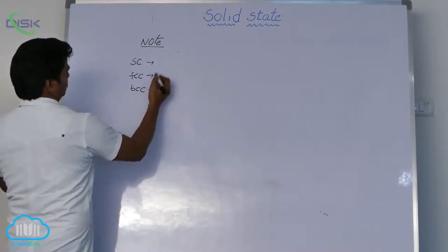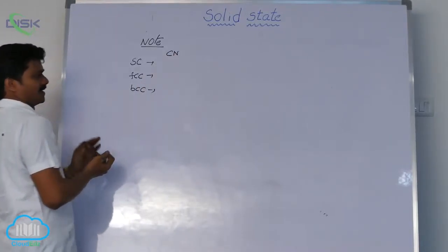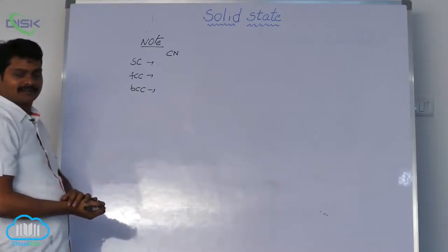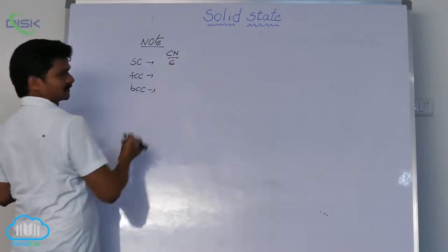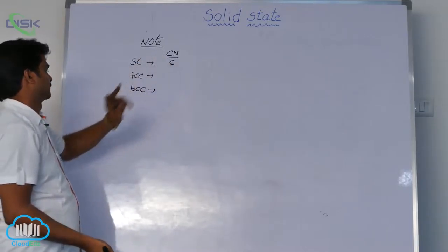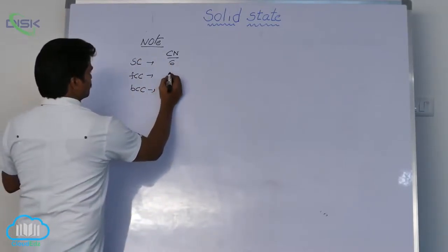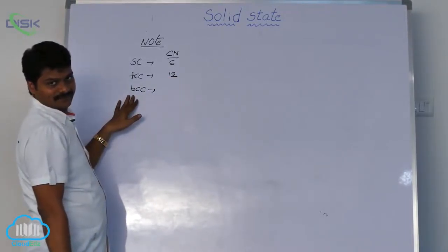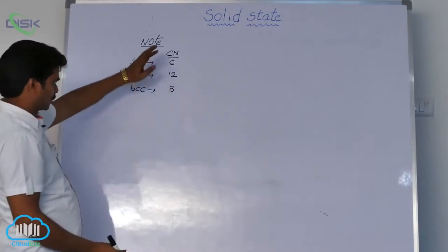In a simple cubic system, let us first discuss about coordination number. The coordination number of simple cubic system is 6. In FCC, the coordination number is 12. In BCC, the coordination number is 8. So, this is about coordination number.